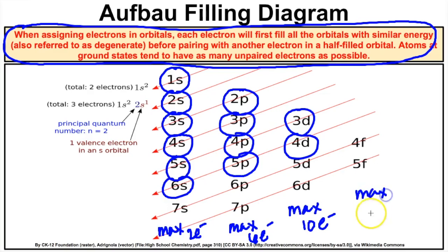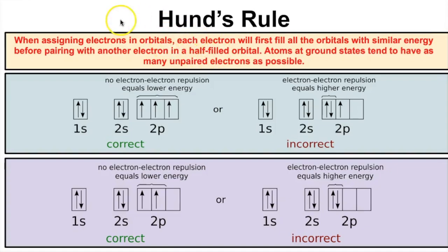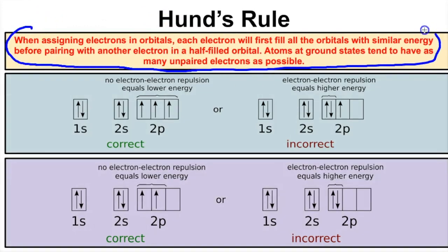So there are two rules so far: the Pauli Exclusion Principle and the Aufbau filling diagram. Now let's look at Hund's Rule and then apply all three principles to some examples. The third and final rule regarding orbital diagrams is Hund's Rule, which basically states that when placing electrons — represented by arrows — into the different orbitals, you must first put one arrow in each orbital before going back and placing a second one.